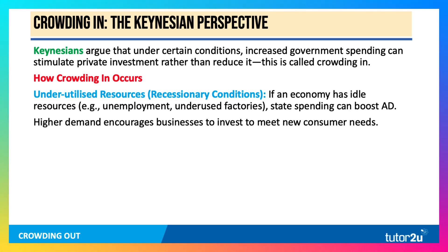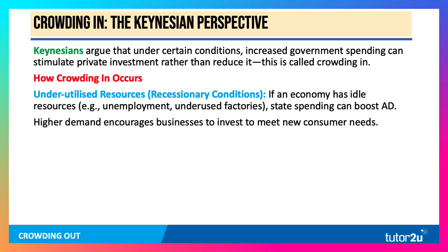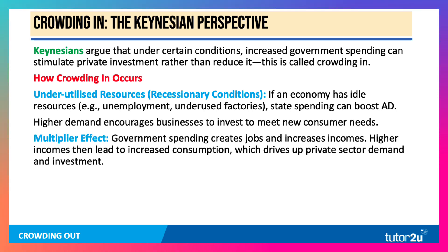So well-timed, targeted fiscal stimulus can actually cause private sector investment to go up because of the impact on animal spirits and expected profits. There's also a multiplier effect: if the government's spending goes up, it increases incomes.